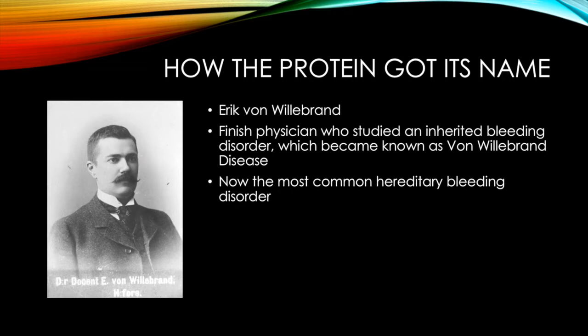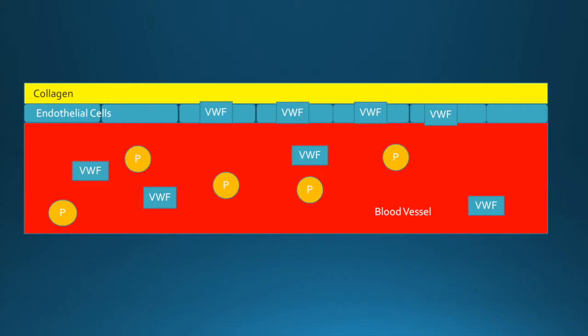Its name is derived from this gentleman, Eric von Willebrand, a Finnish physician who in 1924 began to study an inherited bleeding disorder which became known as von Willebrand disease, today's most common bleeding disorder characterized by a deficiency in the amount or activity of von Willebrand factor.